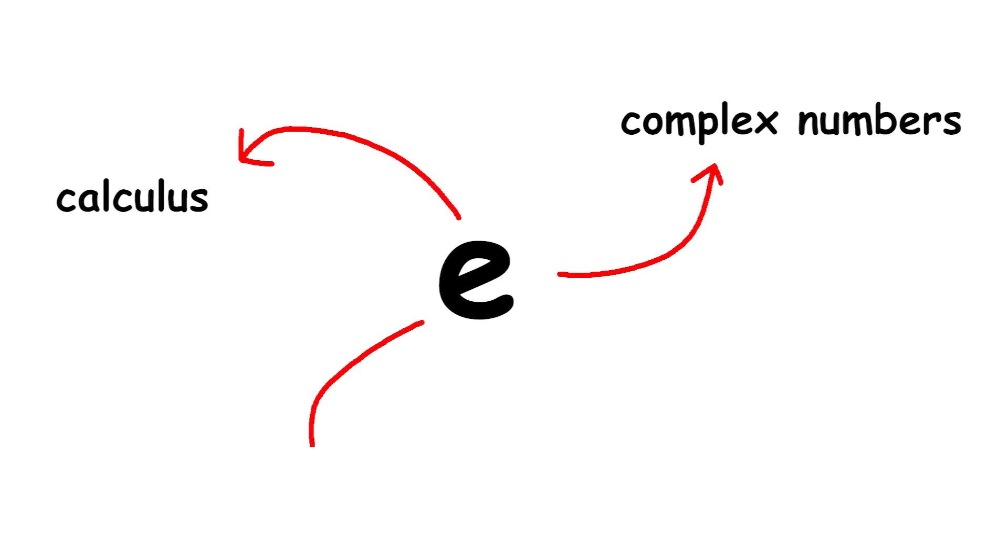The constant e is used in many areas of mathematics and science, including calculus, complex numbers, and population growth models. It represents the rate of continuous growth and is the unique base for which the derivative of the exponential function equals the function itself.